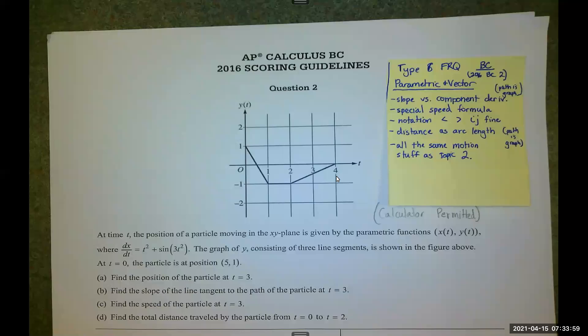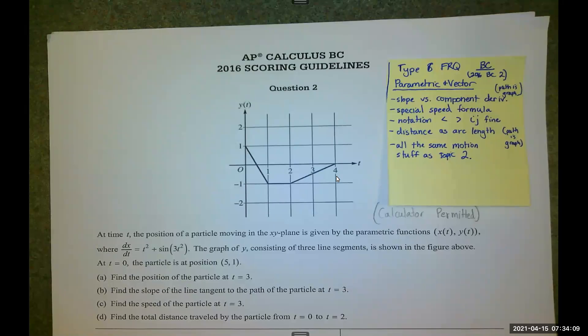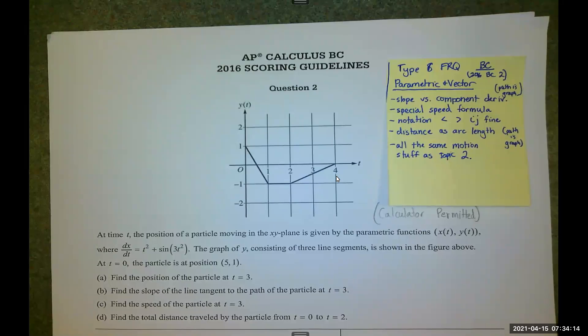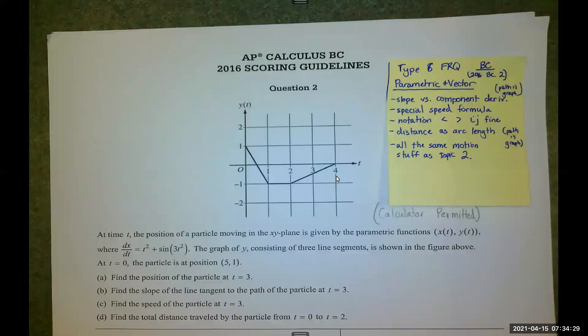Remember that there is a special formula for speed, because we can't just take the positive version of the number. We have to do the square root of the sum of the squares of the horizontal and vertical components. And that turns into distance if you integrate it. Notation when you're doing vectors, either the diagonal braces are fine, the ijs are fine. I found that for the most part on the exam, the diagonal brackets tend to be how it's presented most often.